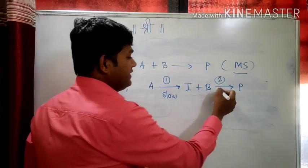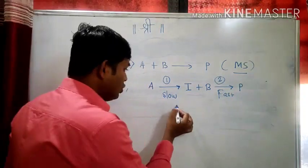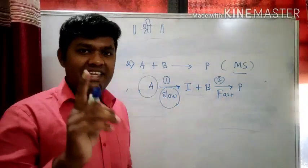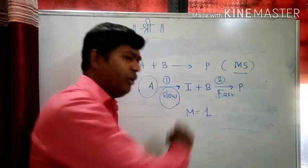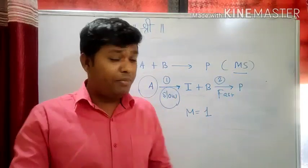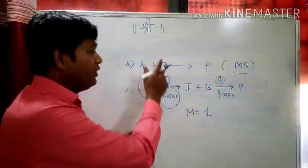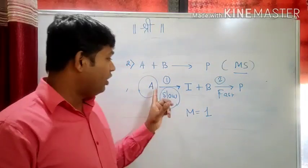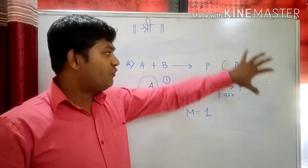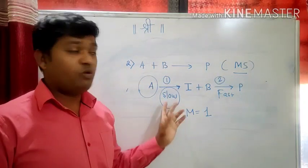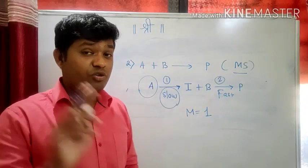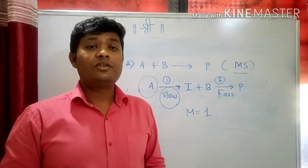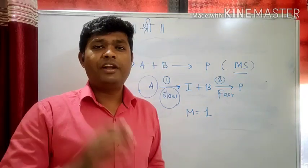If the first step is the slow step and the second step is the fast step, then look at the slow step: how many molecules are involved? There is only one molecule — A. So one molecule is involved, which means the molecularity of the reaction is 1, not 2. Molecularity cannot be 2 because two molecules are not involved in the slow step. For a multi-step reaction you have to predict the slow step, and then count the molecules involved in that slow step.